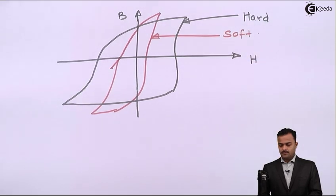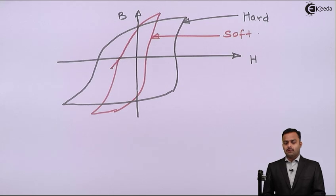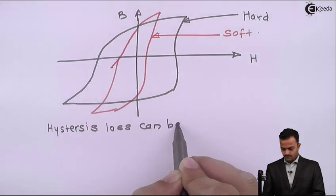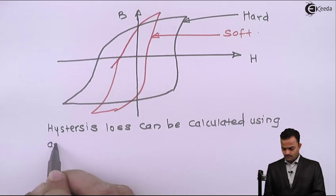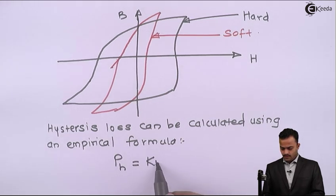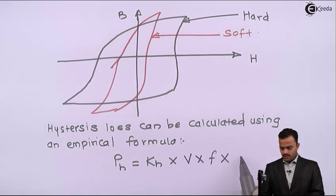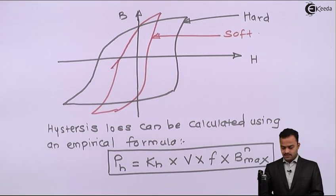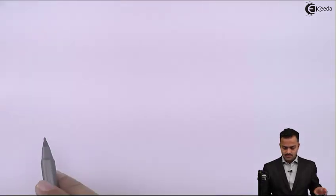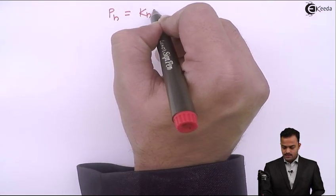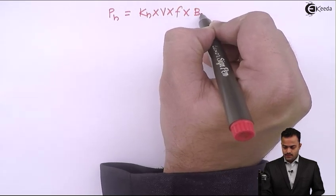Now let's write an empirical formula for hysteresis loss. pH equals KH into V into F into Bmax raised to N. Let me write the formula once again: pH equals KH into V into F into Bmax raised to N.